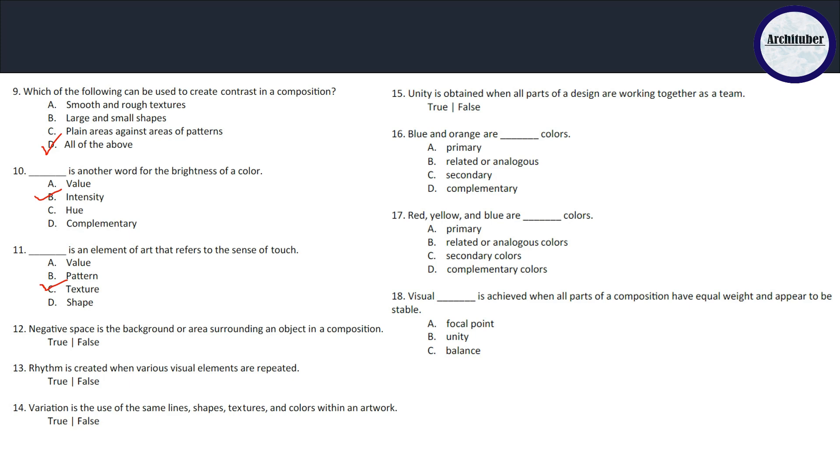Negative space is the background or area surrounding an object in composition - true or false? It is true. Rhythm is created when various elements are repeated - also true. Variation is the use of the same lines, shapes, textures and colors within an artwork - is it right or wrong?